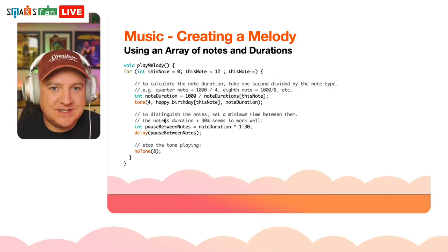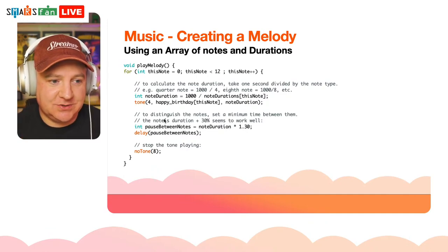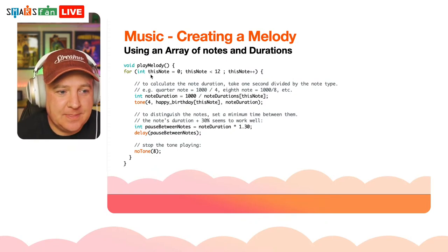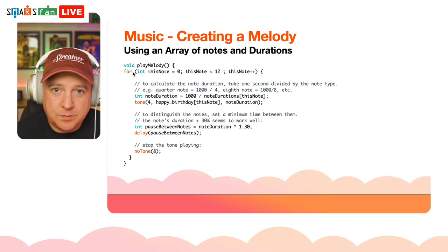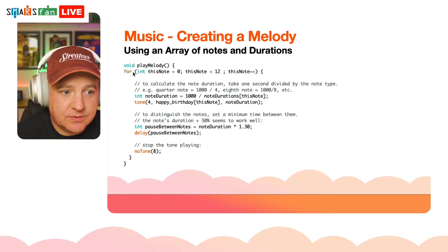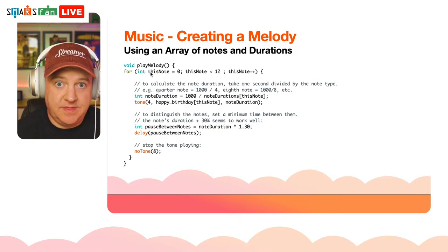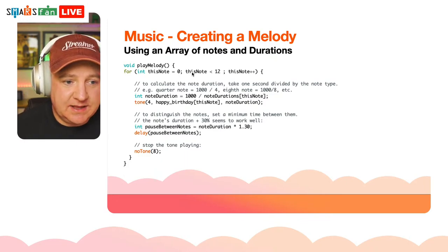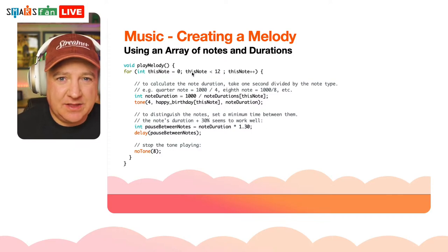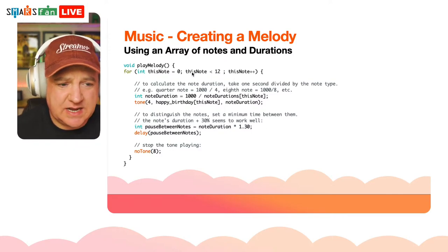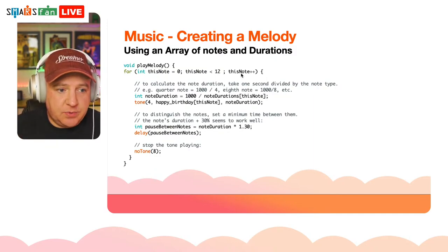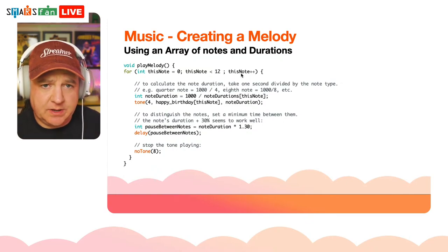The playMelody function is actually only about six lines of code — the rest are comments. It uses a for loop: int thisNote = 0 initialises the counter at zero (because arrays start at zero), the condition is thisNote < 12, and thisNote++ increments by one each time. So it goes through each element of the array in order — first time through it's position 0, then 1, then 2, and so on up to the last note.